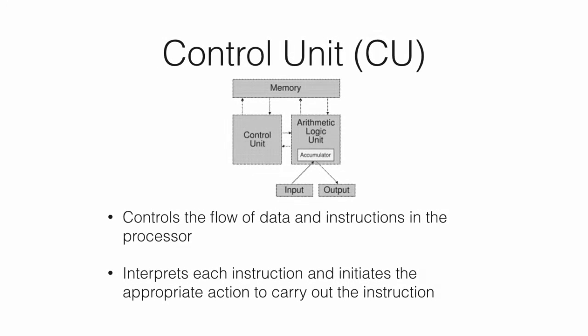The Control Unit, or CU, is the component responsible for the operations in the computer. The Control Unit has the role, much like a traffic light, of interpreting the instructions issued by a program and initiating the appropriate action to be carried out. The types of internal components that the control unit directs include the ALU, registers and communication buses.